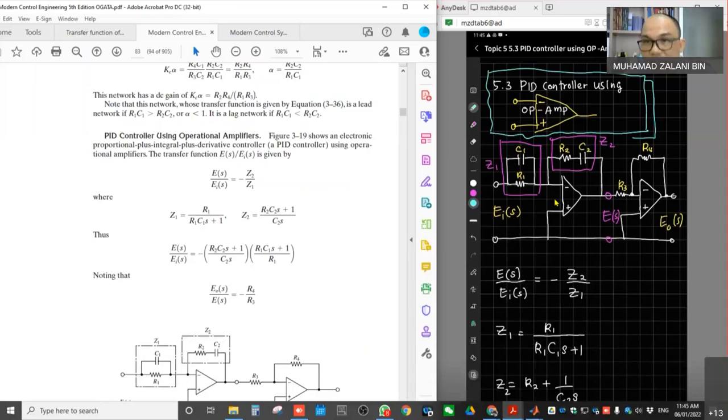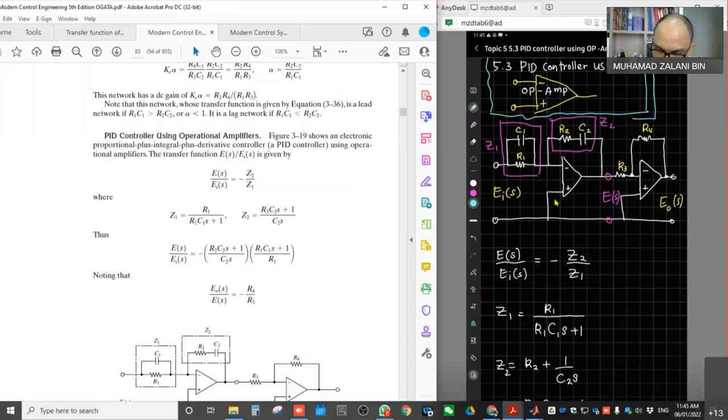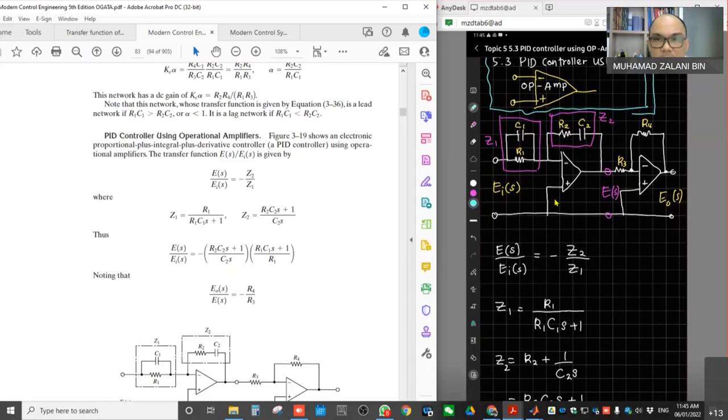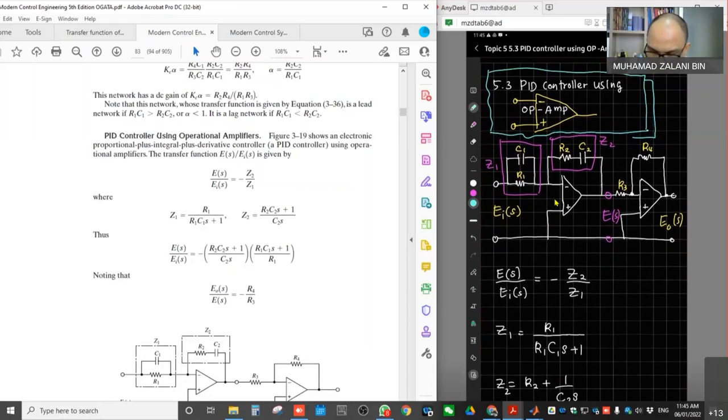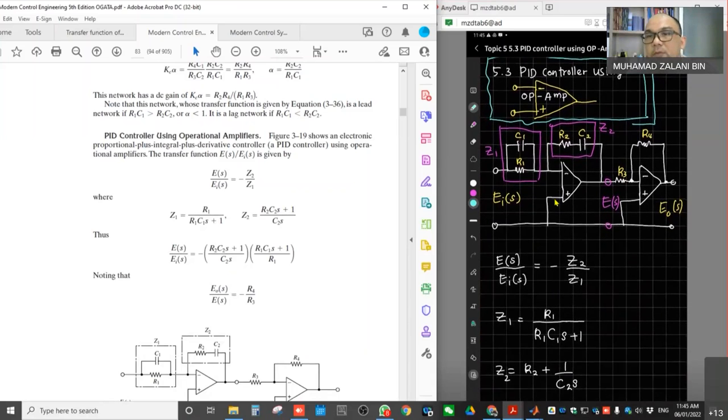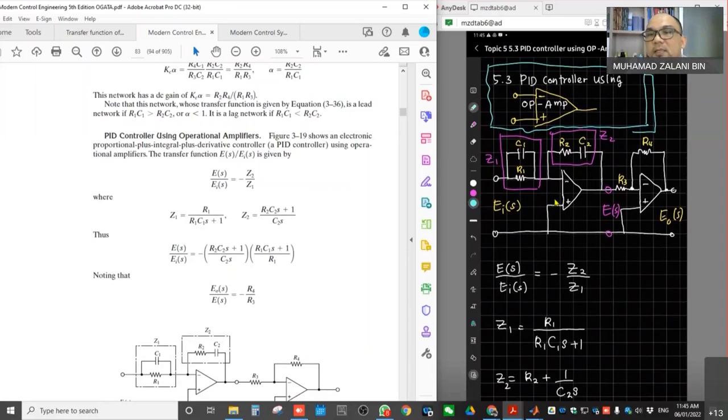Discussing a bit about section 5.3, controller using operational amplifier. There are some notes that I've already shared with all of you related to amplifiers that we can use to build our circuit, for example, operational amplifiers that have been used to build the circuit of PID controller. So we have P, I, and D here with the impedance.